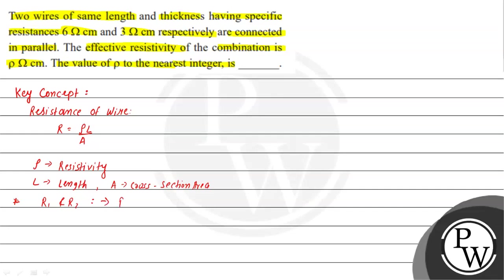The second concept is: when resistors R1 and R2 are connected in parallel, the equivalent resistance is R1 into R2 divided by R1 plus R2. These are the two key concepts needed to solve this problem.